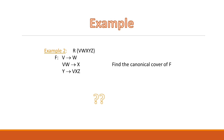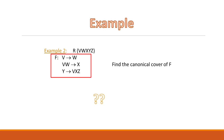Next is example two. Here we are given a relation R with attribute set V, W, X, Y, and Z, and a set of functional dependencies. We have to find out the canonical cover. If you understood the previous example, you should be able to solve this one — try it by yourself and let me know the solution in the comment section.